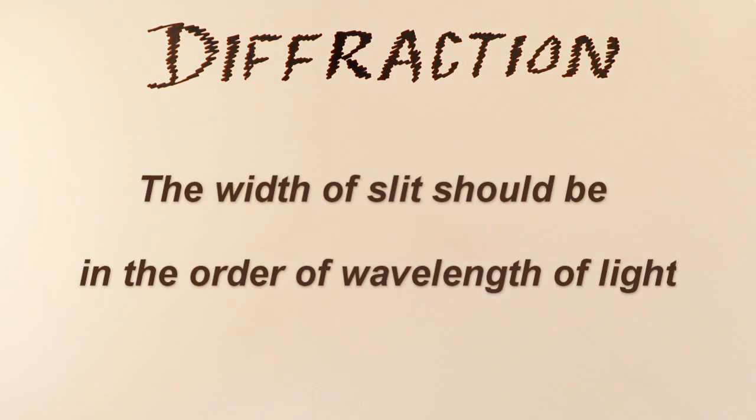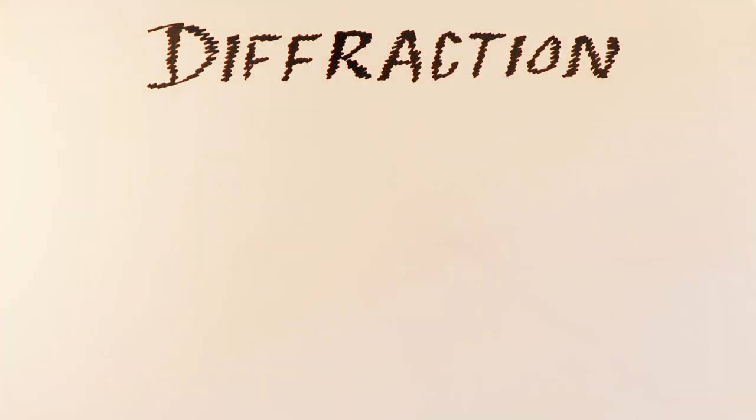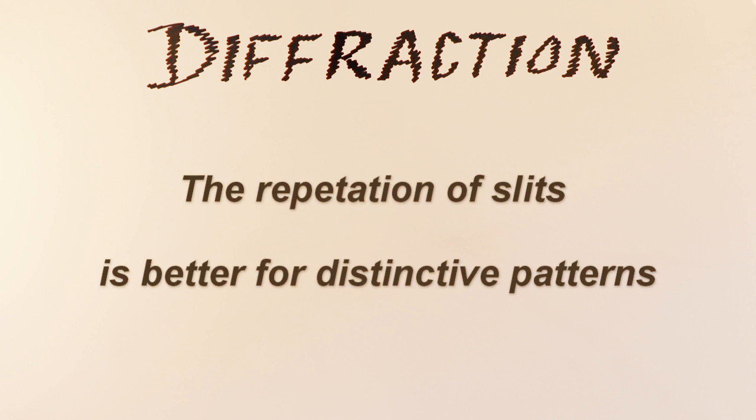There are two important messages to remember from this demonstration. One, the spacing of the slit from which light passes should be in the order of the wavelength of light for the diffraction phenomena to occur. Second, the repetition of the slits helps to obtain the distinctive diffraction pattern. This repetition is what we find in crystal structure. Therefore, crystal structure gives a nice and clear diffraction pattern.